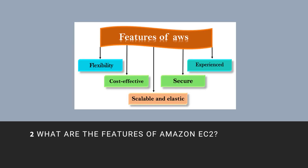What are the features of Amazon EC2? Features include flexibility, cost-effectiveness, scalability, elasticity, and security. Amazon EC2 provides virtual computing environments known as instances, and pre-configured template images for your instances known as Amazon Machine Images.